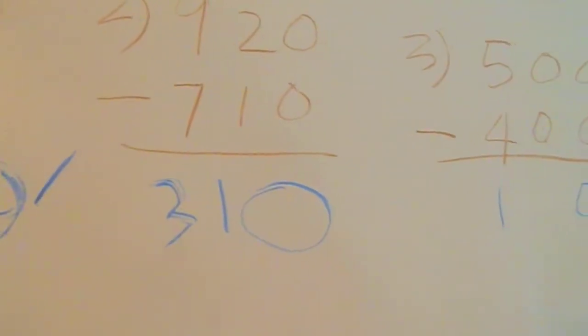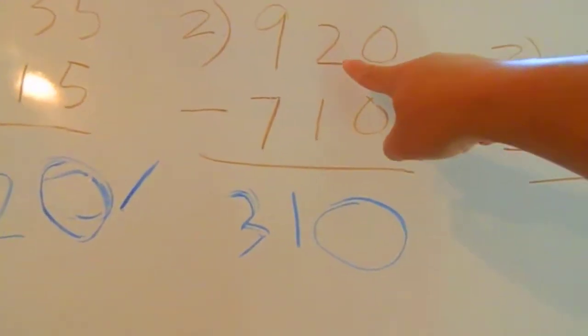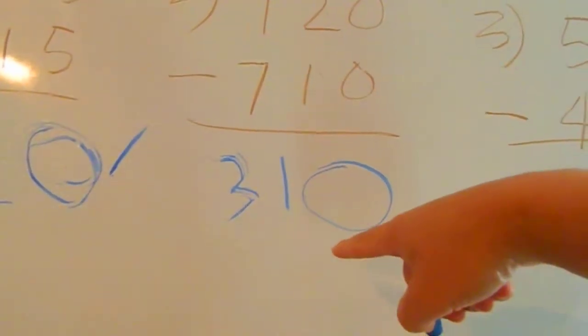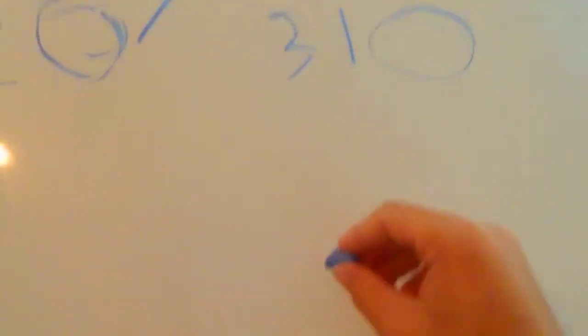0 minus 0 is 0. 2 minus 1 is 1. 9 minus 7 is. Make a line.